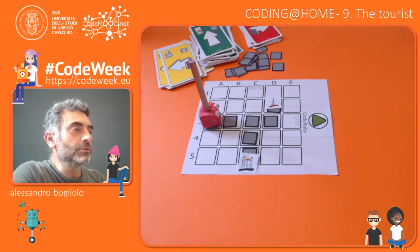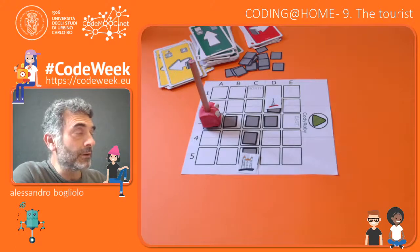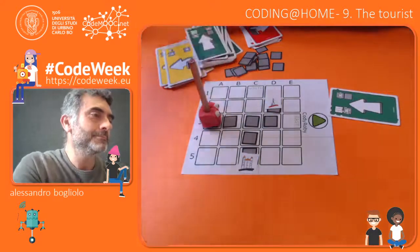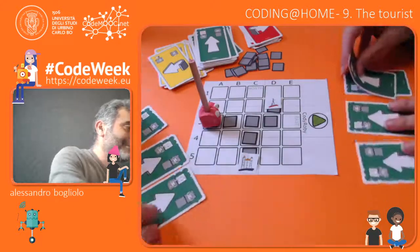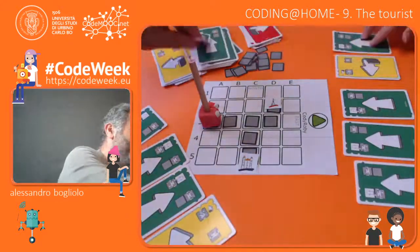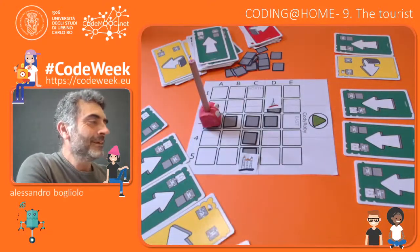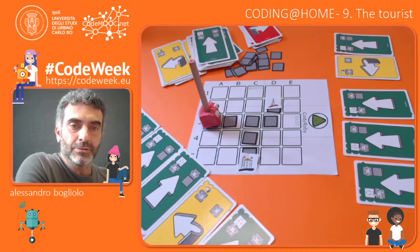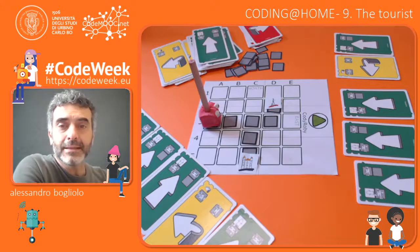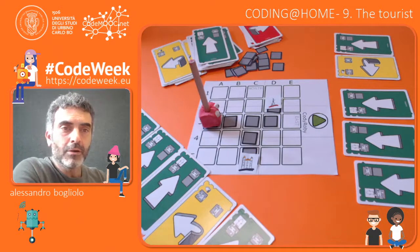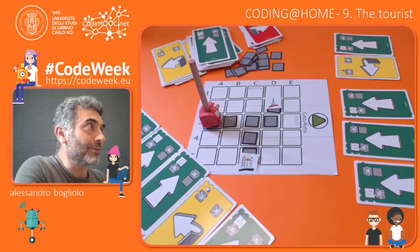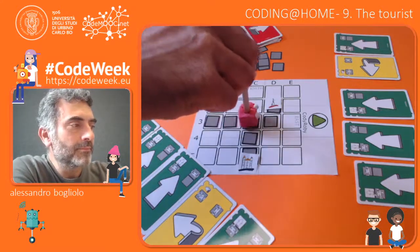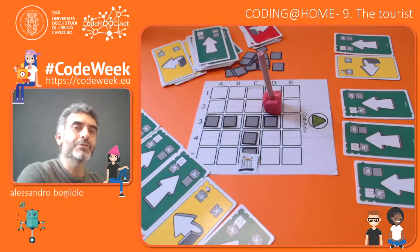Now the tourist wants to go to the statue of Raphael the painter. Three, two, one, go! Notice that this time the two programs are the same. So there are only two possible situations: either Anna wins because she finished first, or nobody wins if the program is not correct. So I check her program: forward, forward, forward, forward, left, forward. She's the winner again!